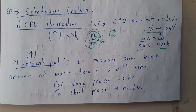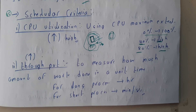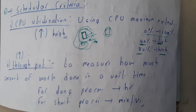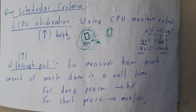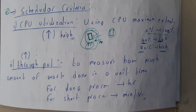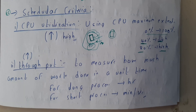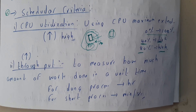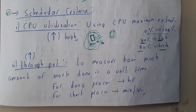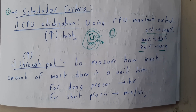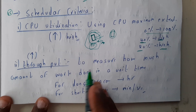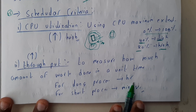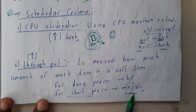Now let us go through throughput. Throughput is used to measure how much work is done in a particular amount of time. For example, when you connect to the internet, they mention 20 Mbps or 100 Mbps — that measures download or upload speed per unit time. Similarly, for long processes we measure throughput in hours, and for short processes in minutes and seconds.